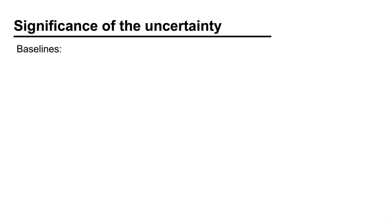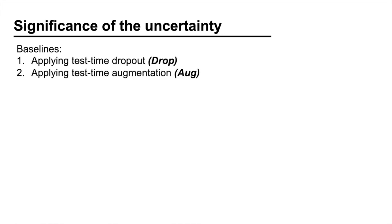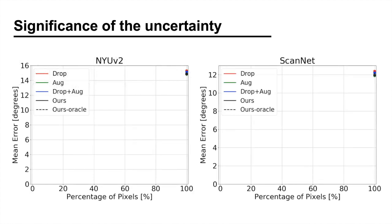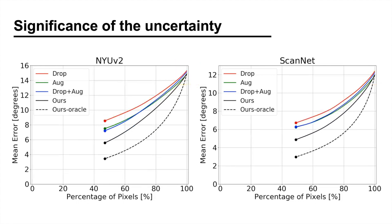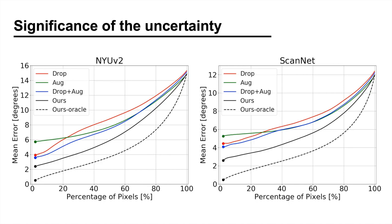As we couldn't find other method for estimating the surface normal uncertainty, we compared our method against task-independent approaches. Specifically, we tried using test time dropout, test time augmentation, and both. When evaluated on all pixels, all methods perform similarly. However, as we remove the pixels with high uncertainty, our method gets significantly more accurate than the others. This suggests that the uncertainty estimated by our method correlates better with the prediction error.